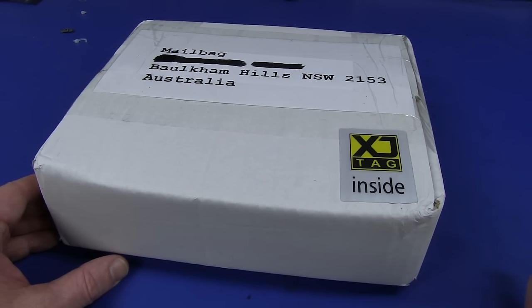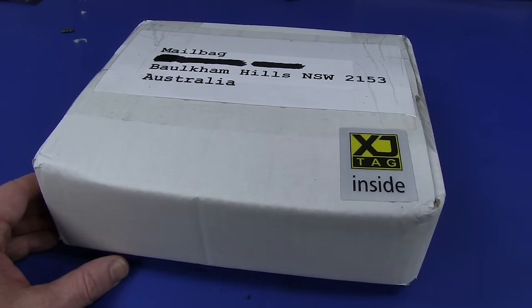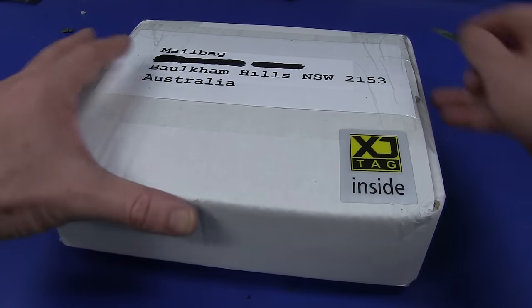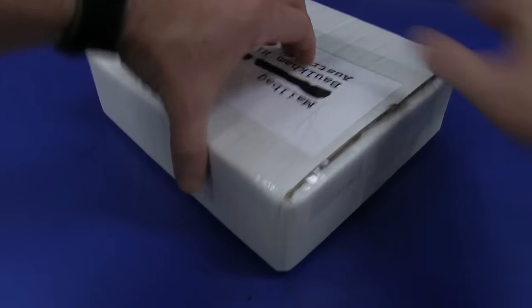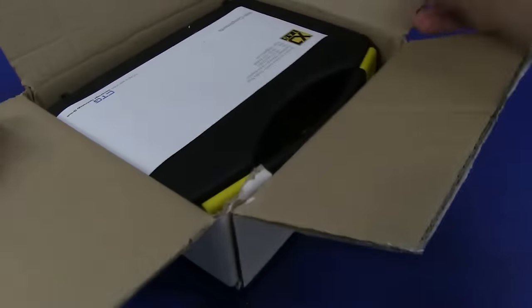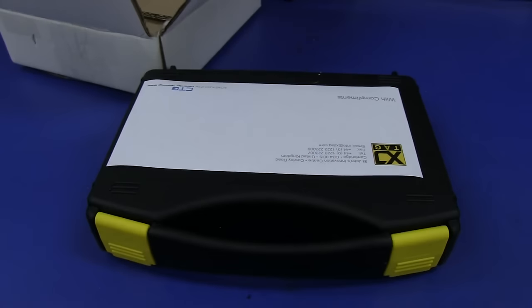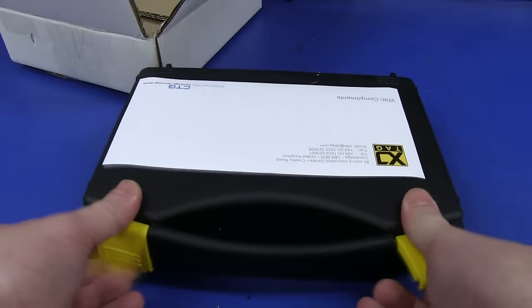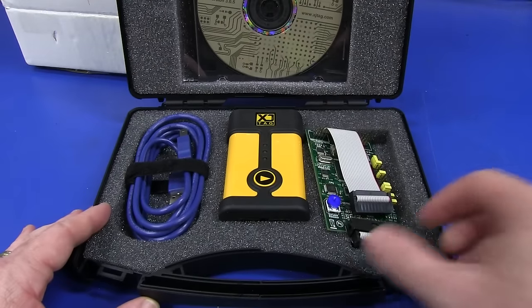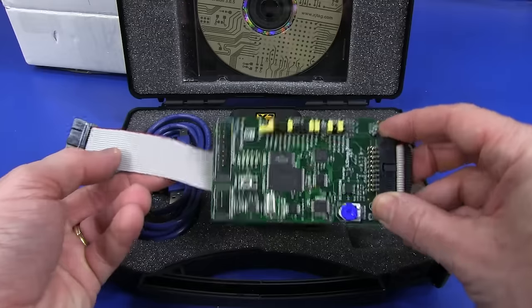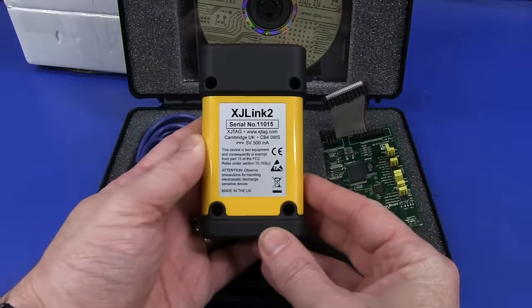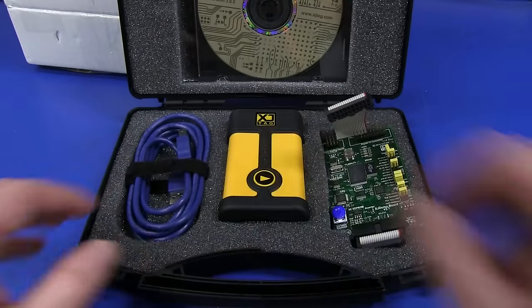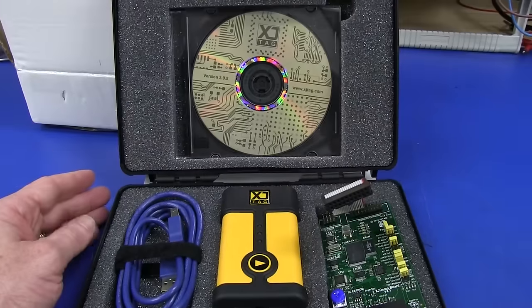And thankfully, we have something in the mailbag from XJTAG, purveyors of fine JTAG pornography, that should be able to help us have a look at the hardware side of things, and the software. So let's crack it open and see what we've got. Oh-ho, look at this. Beautiful. With compliments. We have ourselves a JTAG demo board. Looks very impressive. We have ourselves an XJTAG, ex-J-Link 2, JTAG interface and some software.